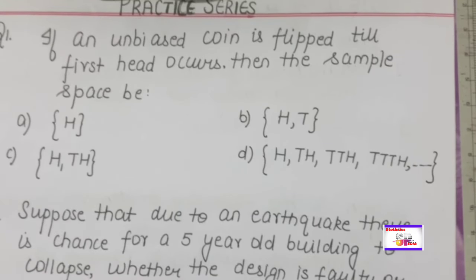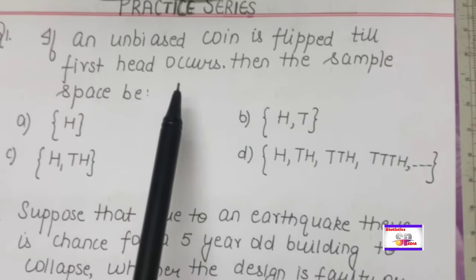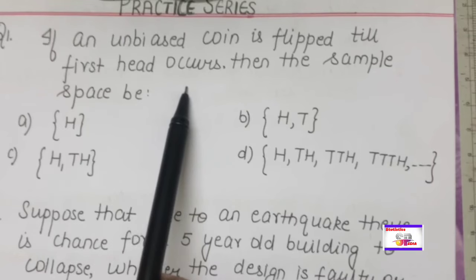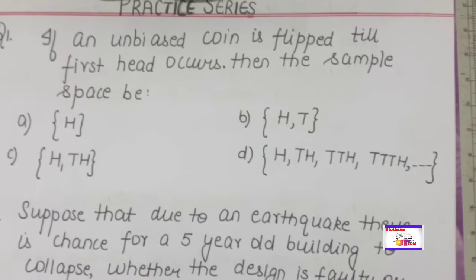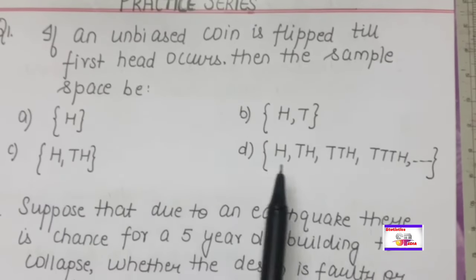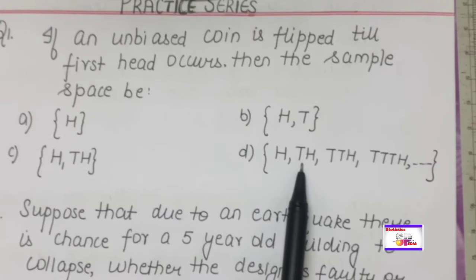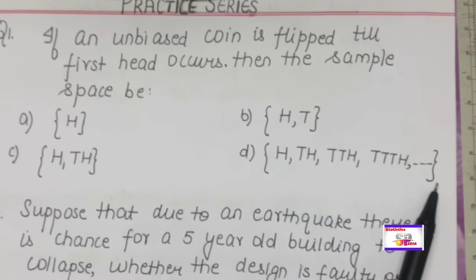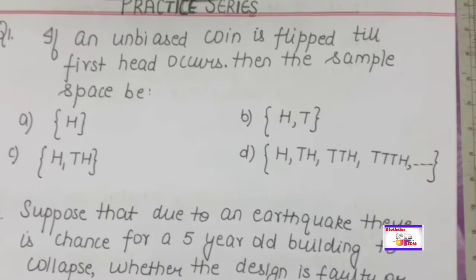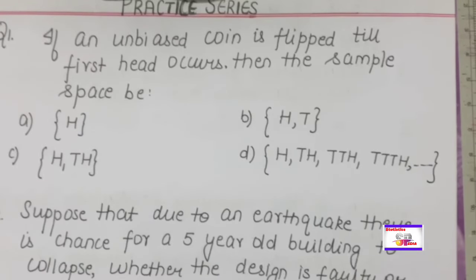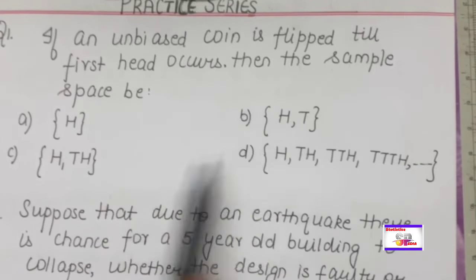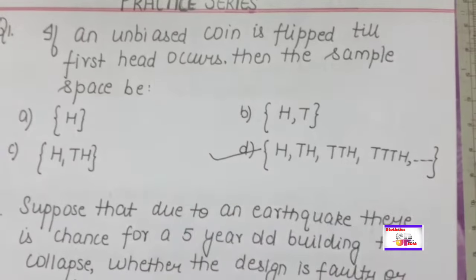The possible outcomes — what possibilities can happen? You can get a head on the first toss, the second toss, the third, fourth, fifth, and so on. This is an infinite sample space — a set of possible outcomes. Since it is not finite, options suggesting a finite sample space are all wrong. The correct answer is that it is an infinite sample space.